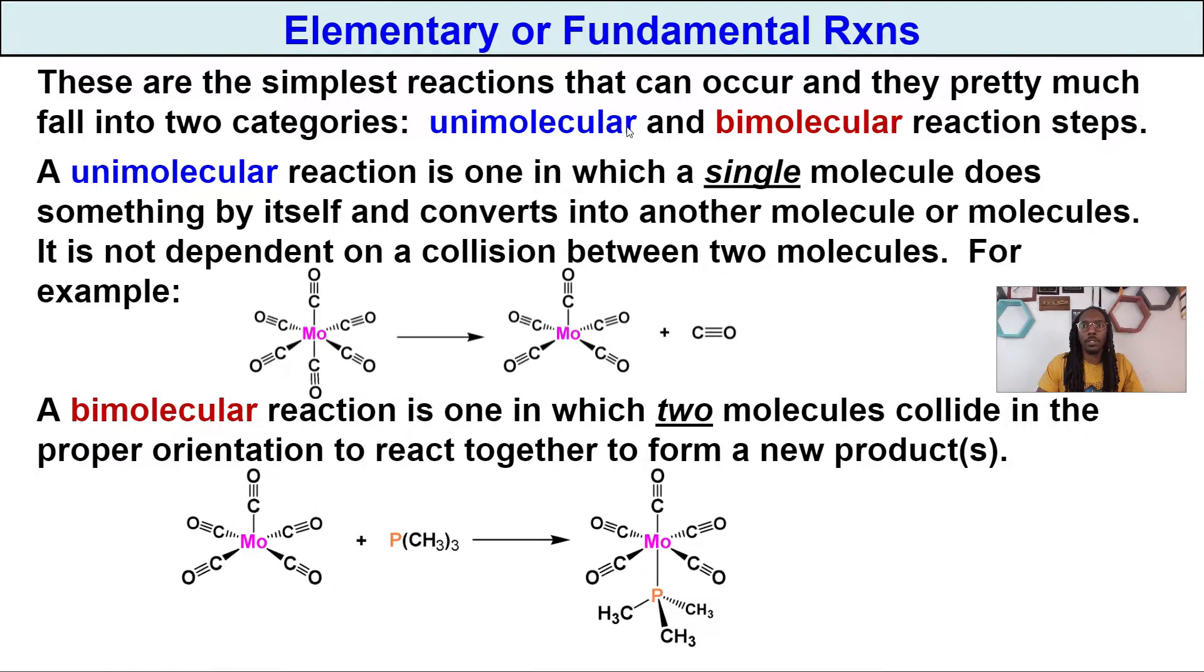All right, so let's talk about our two types of reaction steps. We have unimolecular and bimolecular. So let's start off with unimolecular reactions. We look here, right? Basically what we need to know about unimolecular reactions is that this single molecule will do something to itself. So basically it's going to self-react and then it's going to be converted into another molecule or molecules. So it can be converted to two, three, just depends. It is not dependent on a collision between two molecules. That's the key thing.